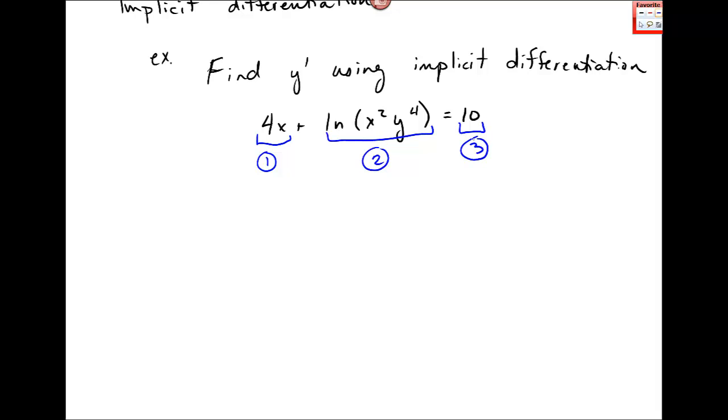Let's take piece 1 and 3, I think you're comfortable differentiating those. The derivative of 4x is just 4, and piece 3, the derivative of 10 is just 0.